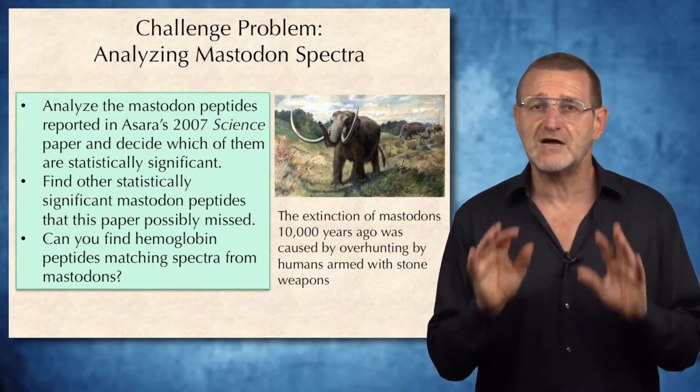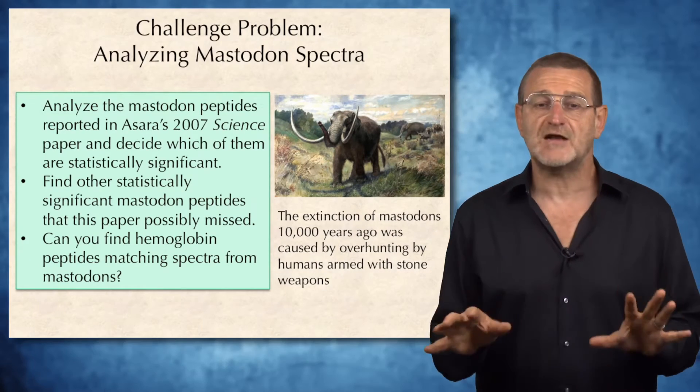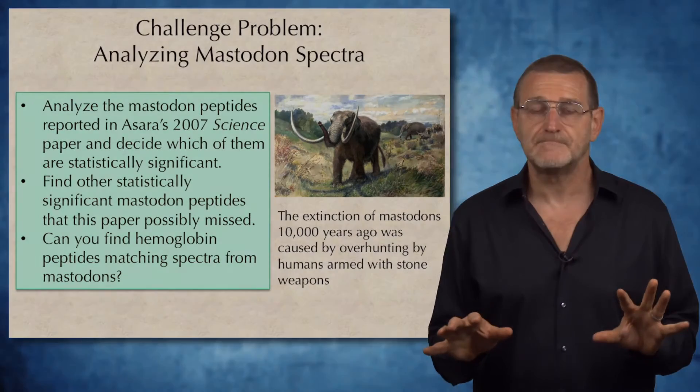So we want you to analyze the mastodon peptides reported in this paper and decide which of them are statistically significant. We want you to find other statistically significant mastodon peptides that this paper possibly missed. And we want you to find hemoglobin peptides, if you can, matching spectra from mastodons. And we want you to find out much more.